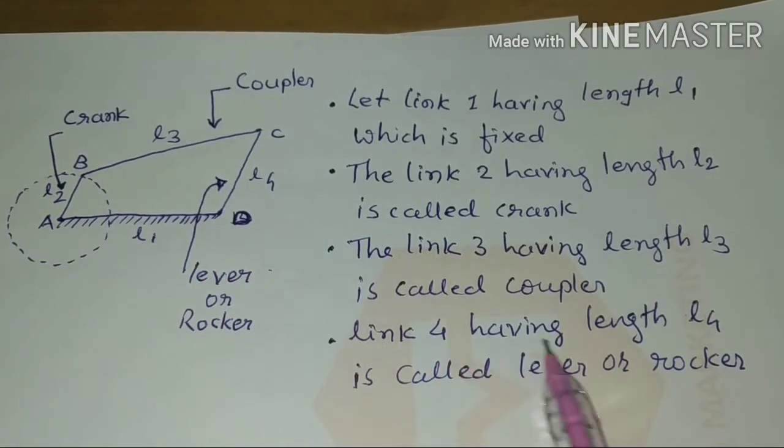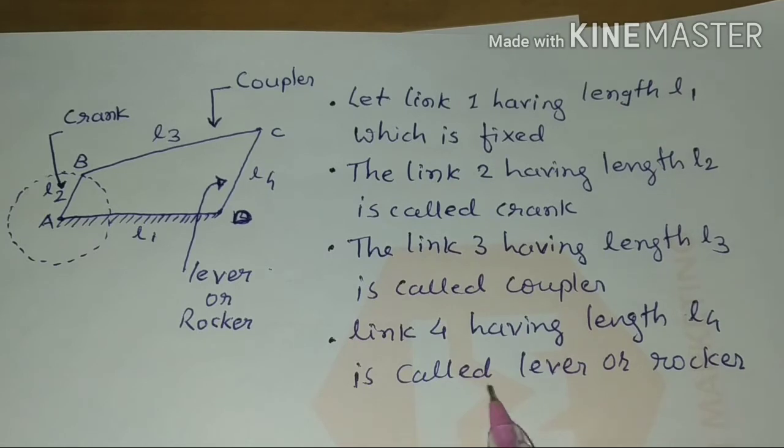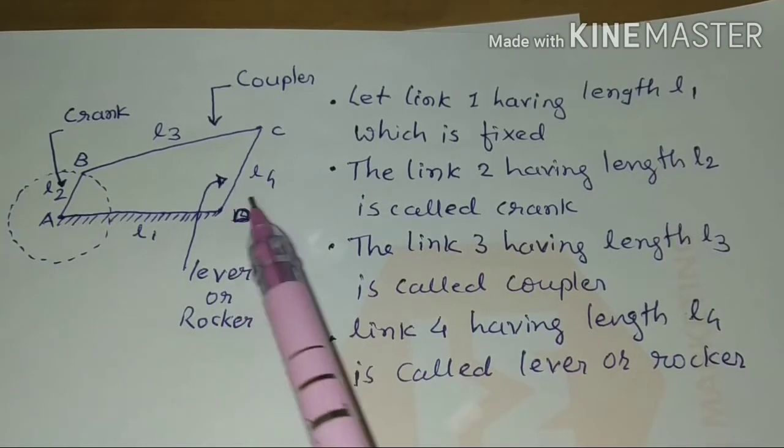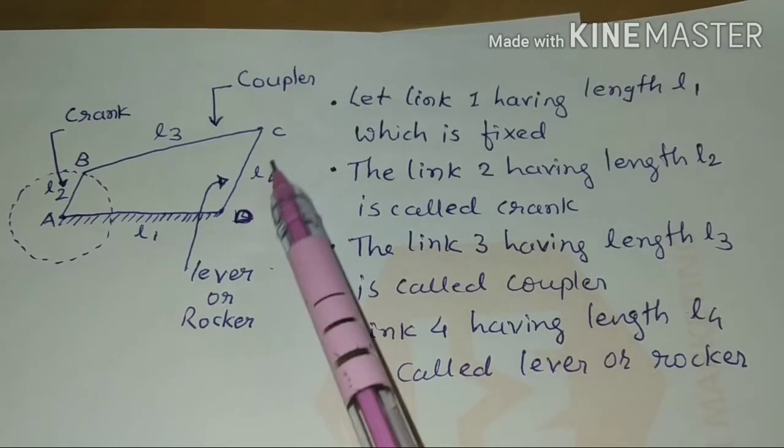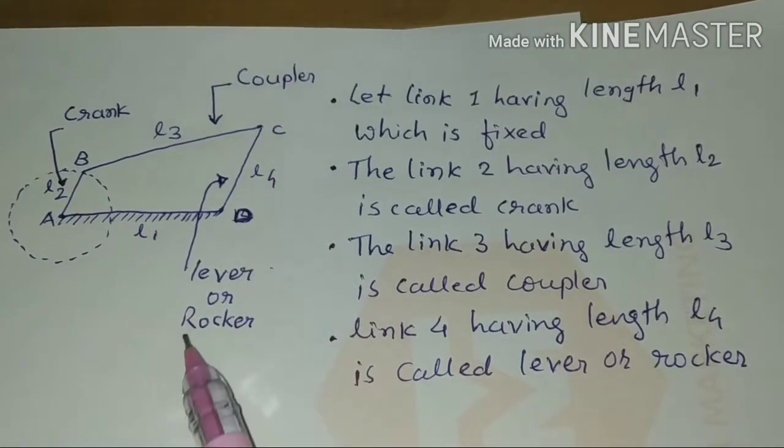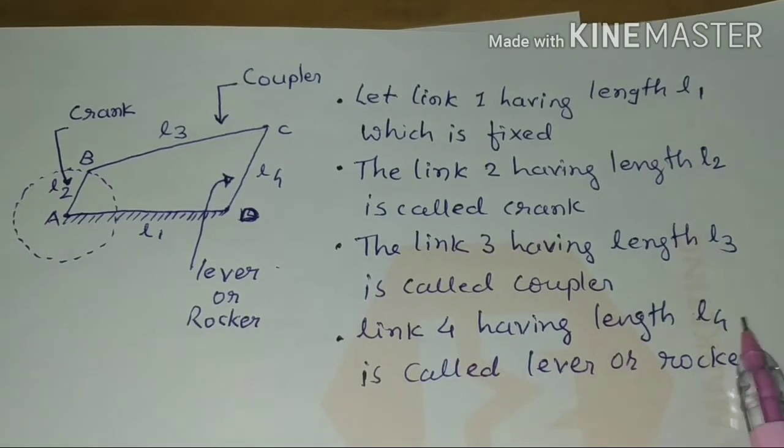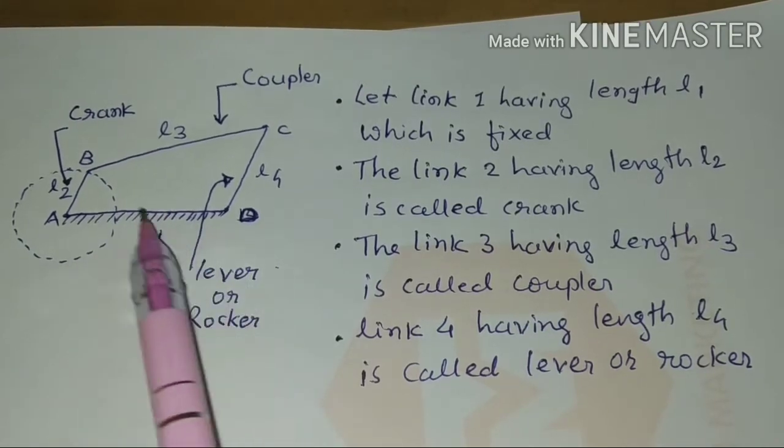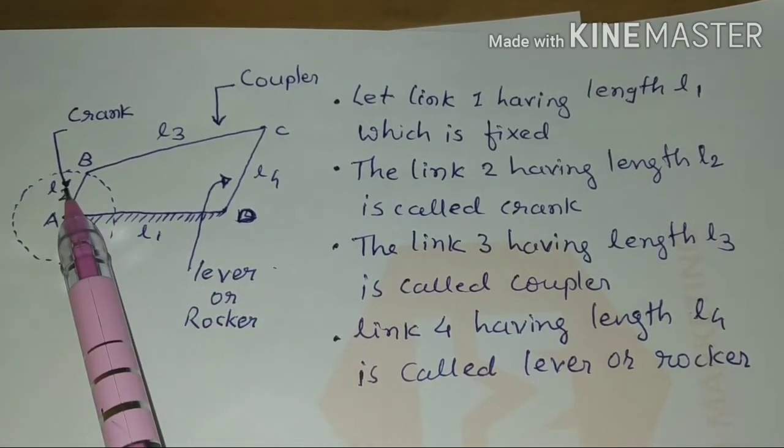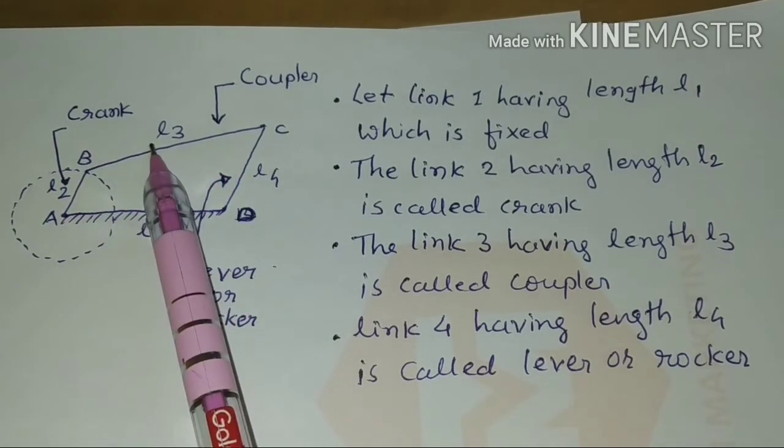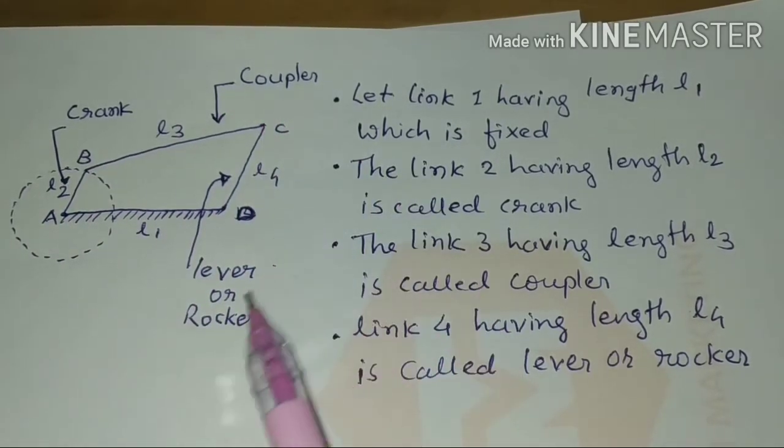Link 4 having length L4 is called lever or rocker. This link is C to D. Link 1 which is fixed L1, Link 2 L2 is called crank, Link 3 coupler, Link 4 is lever.